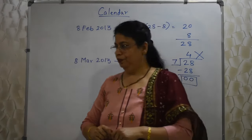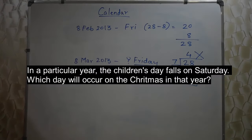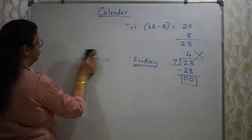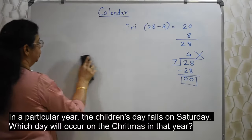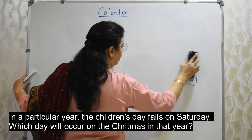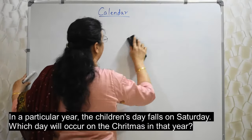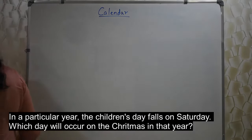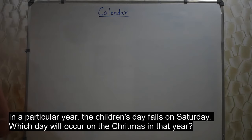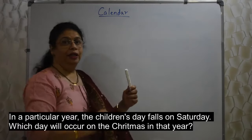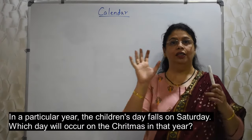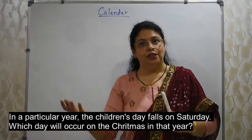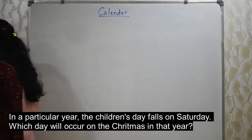Next question: In a particular year, Children's Day falls on Saturday. Which day will occur on Christmas in that year? An important note — you must know the dates of important days. Children's Day is 14th November, Teacher's Day is 5th September, Independence Day, Republic Day, Gandhi Jayanti — you should know these dates.